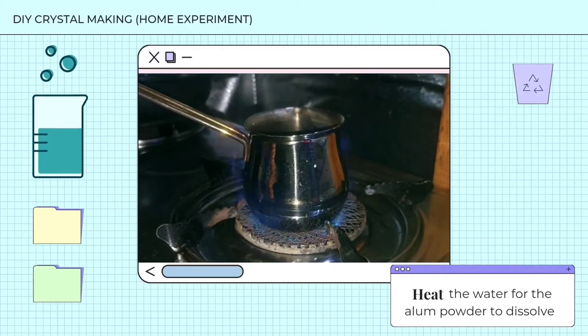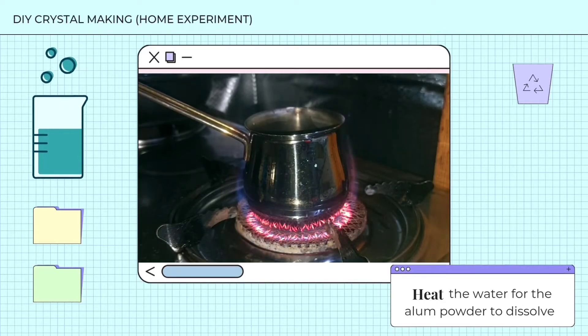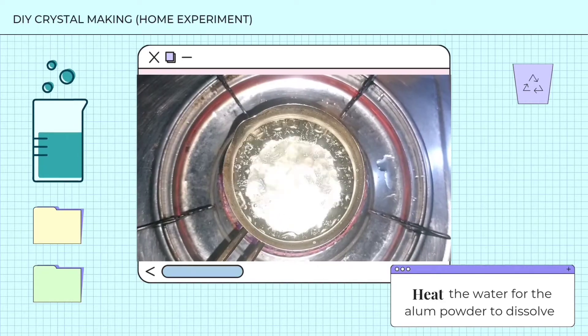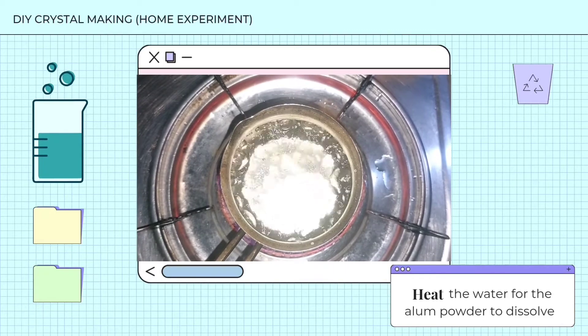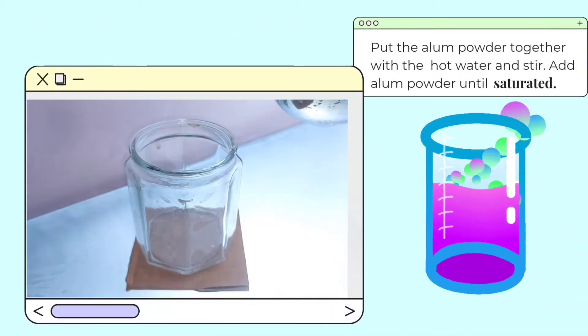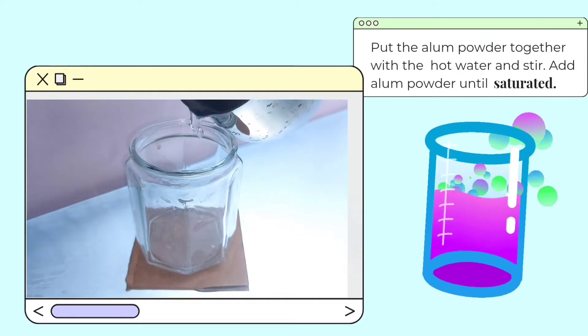First process in growing crystals is the preparation of saturated alum solution. The initial step is to boil the water to be able to dissolve the alum later. Pour the hot water in a clean jar.